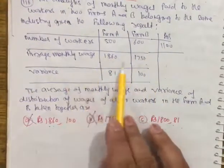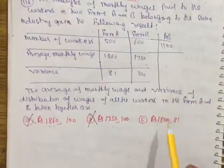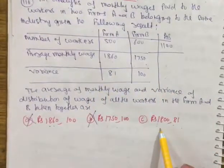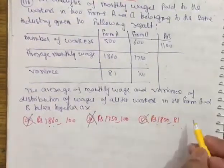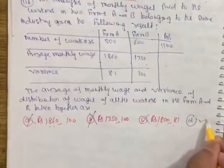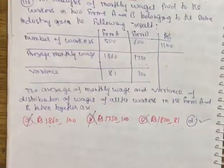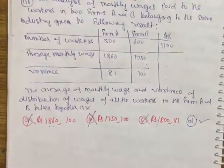The average monthly wage will change and the variance will change when combining the two firms. Therefore, none of the given options showing the same variance as one individual firm can be correct. This is a presence of mind question requiring logic rather than calculation.